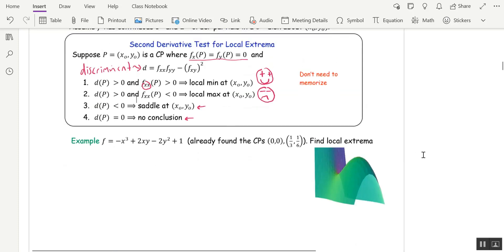So let's do an example. We've got f of xy equal to this function, and we've seen this function before, and we already found the critical points. They were 0, 0, and a third one-sixth. We want to find the local extrema, so we want to classify those two points. So the first thing we need is the discriminant. So I'll find fx again, negative 3x squared plus 2y, and so fxx is negative 6x, f sub y is 2x minus 4y, so f sub yy is negative 4, and then we're going to need f sub xy, take fx and take the partial with respect to y, and that's 2.